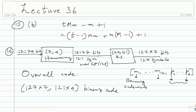The overall code is a binary code of block length 127×7 and dimension 121×4. The question asks for block length, dimension, and a proof of linearity, as well as a bound on minimum distance.